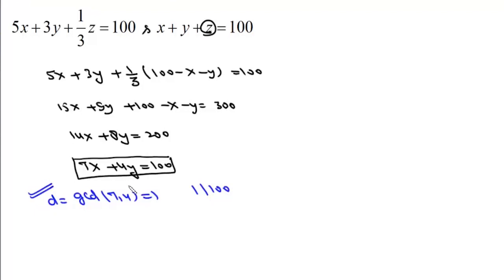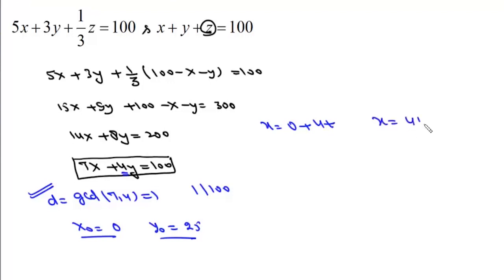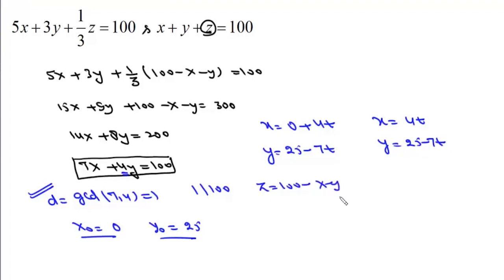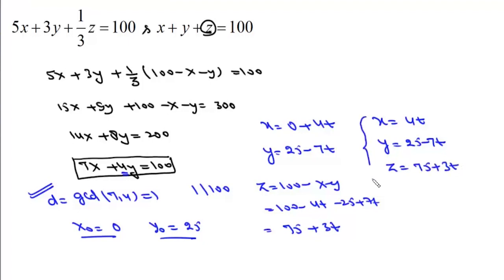Now we need to find a particular solution. Since 4 divides 100, we have 25·4 = 100, so one solution is x0 = 0 and y0 = 25. The general solution is x = x0 + (b/d)·t; since b is 4 and d is 1, we get x = 4t. And y = 25 - (a/d)·t = 25 - 7t. Then z = 100 - x - y = 100 - 4t - 25 + 7t = 75 + 3t. So the general solution is x = 4t, y = 25 - 7t, z = 75 + 3t.